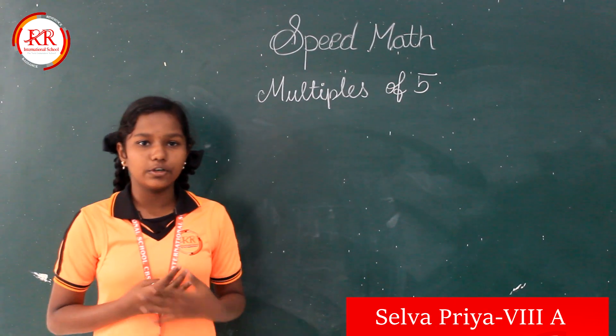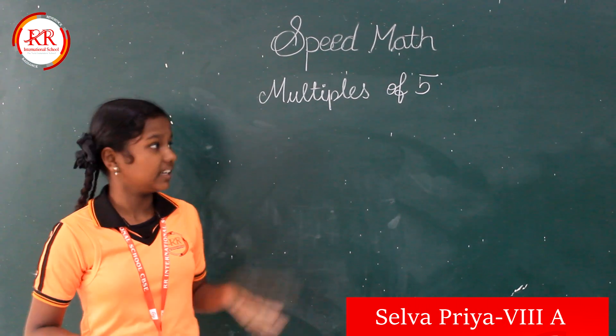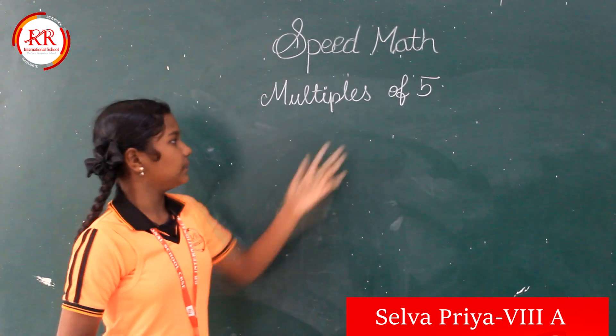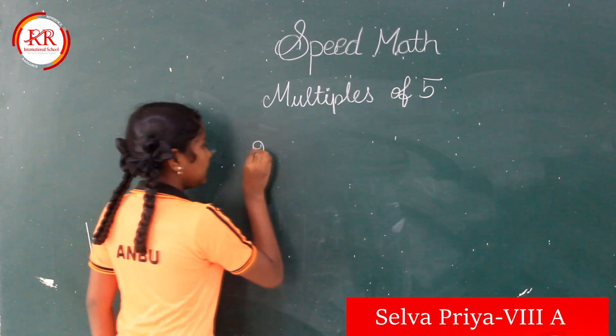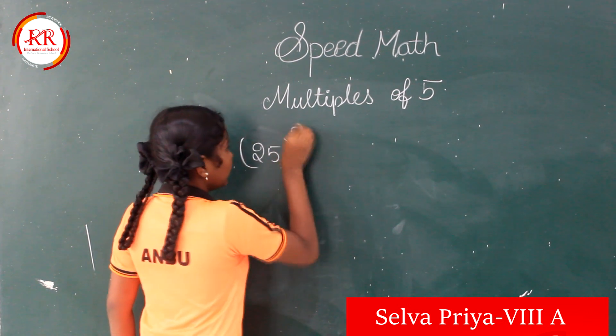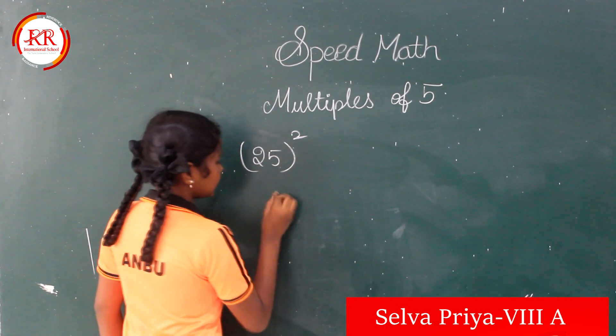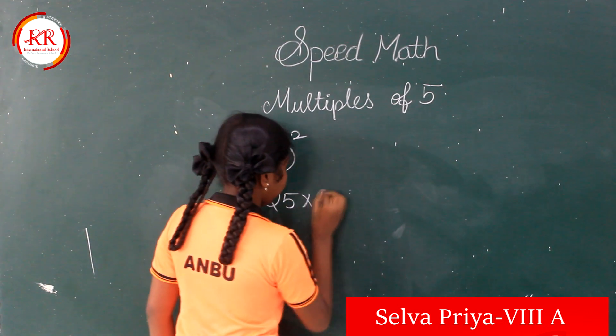Hi y'all. Today I am going to share a math multiplication trick. It is multiple software. Let us take an example: 25 squared. 25 squared is nothing but 25 into 25.